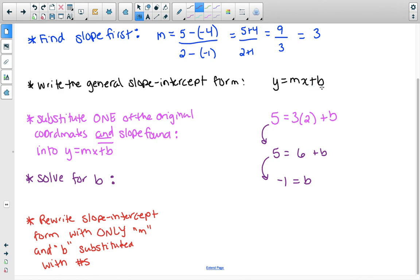So we're going to go back to this original form in black and we're going to rewrite this but we're going to have a number for m and we're going to have our number for b. So our final answer will be y equals, our m was 3, x, then our b is negative 1, so we'll put minus 1. This is our final answer.